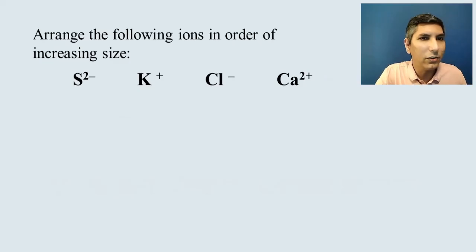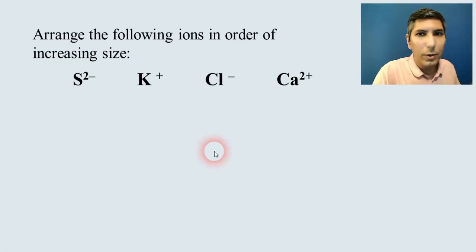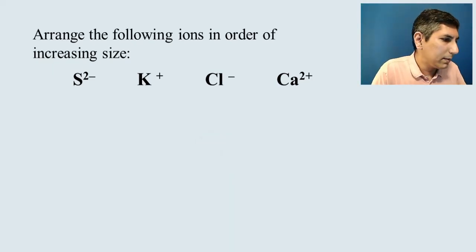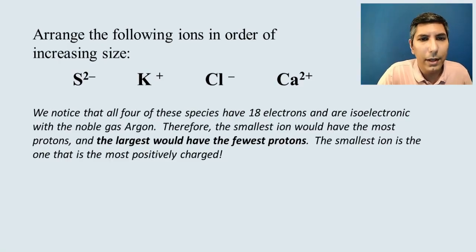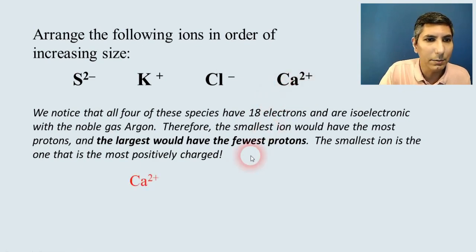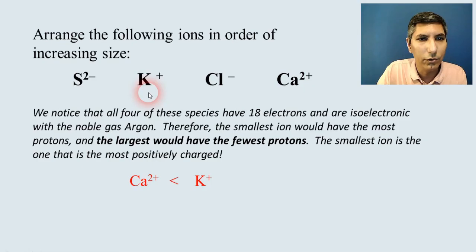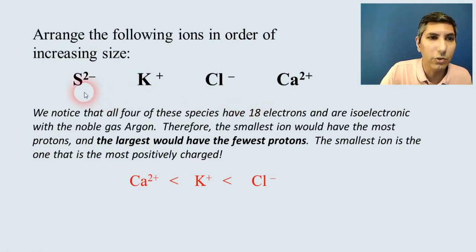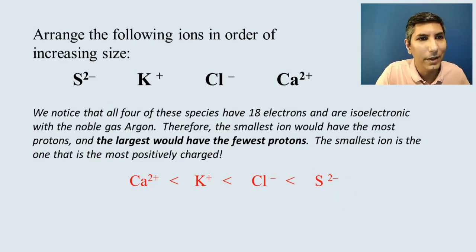Let's arrange these ions in order of increasing size. Looking at the periodic table, all four — Ca²⁺, K⁺, Cl⁻, and S²⁻ — are isoelectronic, all having 18 electrons. So the smallest is the most positively charged: Ca²⁺. Then K⁺, then Cl⁻, and the largest is S²⁻, which is the most negatively charged and also has the fewest protons.